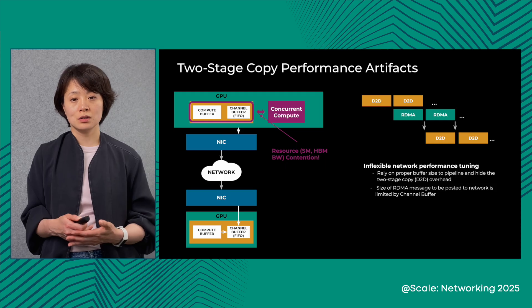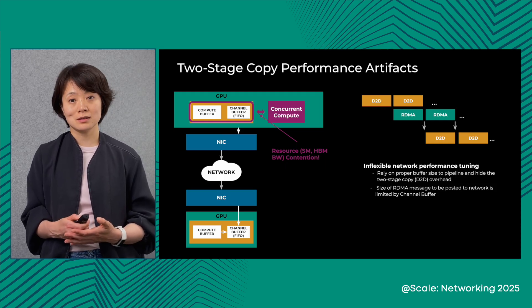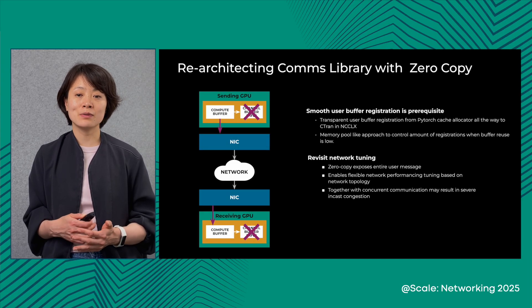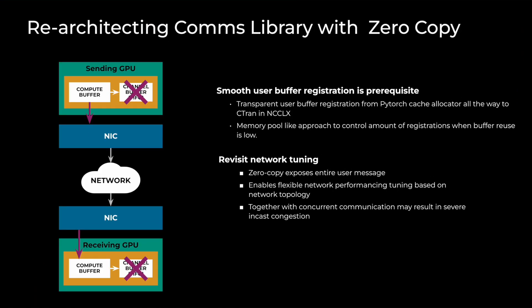As the core renovation, we re-architected this framework to be zero-copy based. In the zero-copy scheme, the source NIC can directly read data from the source user compute buffer, perform RDMA, and transfer it directly to the user destination compute buffer. This essentially eliminates the extra SM and HBM node-store bandwidth required by the two-stage copy. Thus, concurrent computation and communication can now be driven by different hardware without any contention.